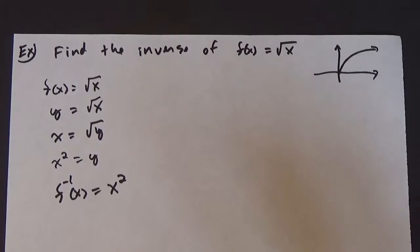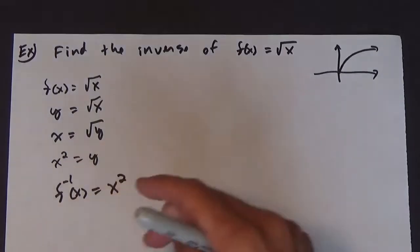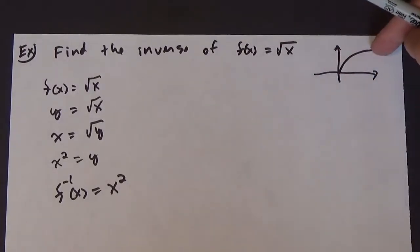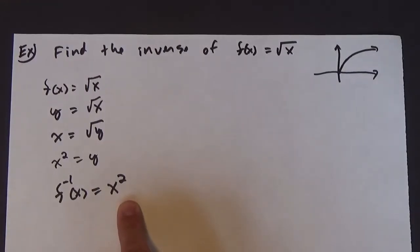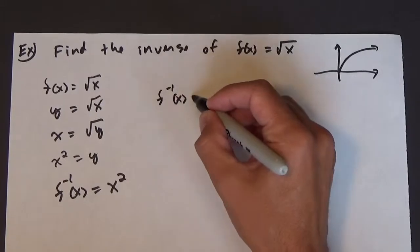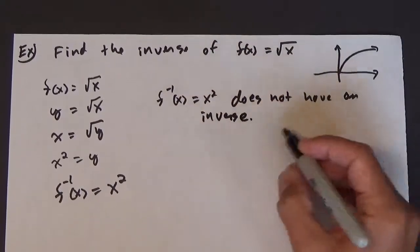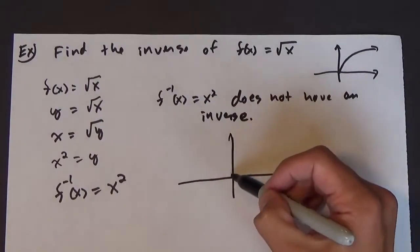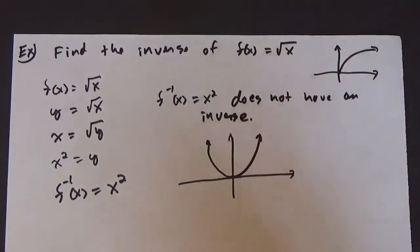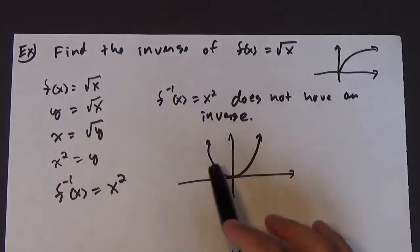Some of you might be thinking: wait, we just looked at whether x² has an inverse, and the answer is no. If the original function has an inverse, then the inverse function also has to have an inverse. But f⁻¹(x) = x² does not have an inverse — if you sketch it, it doesn't pass the horizontal line test. So there's definitely something going wrong here, and it has to do with the domain.